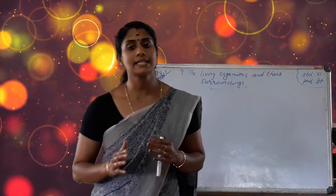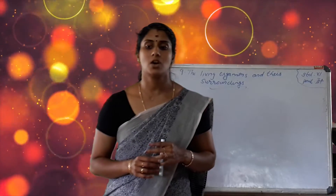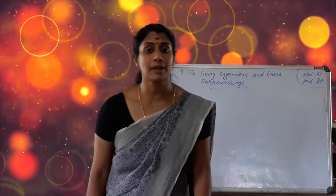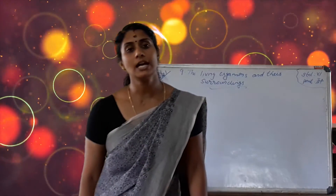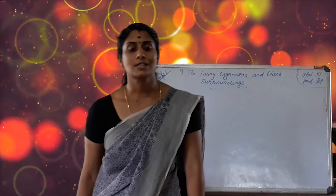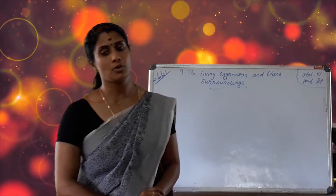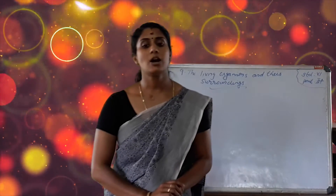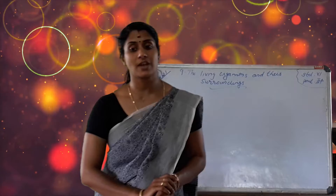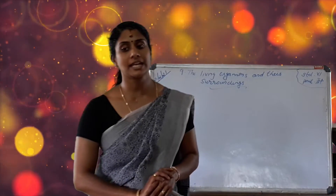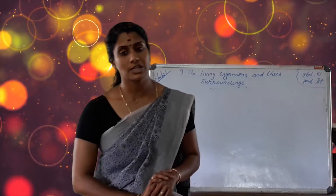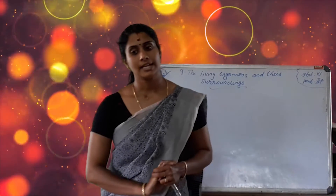The movement involving a change in place in animals is called locomotion. Next is cellular structure. Cells constitute plant and animal bodies. Cells originate in various ways in different organisms and help carry out various functions like nutrition, respiration, etc.